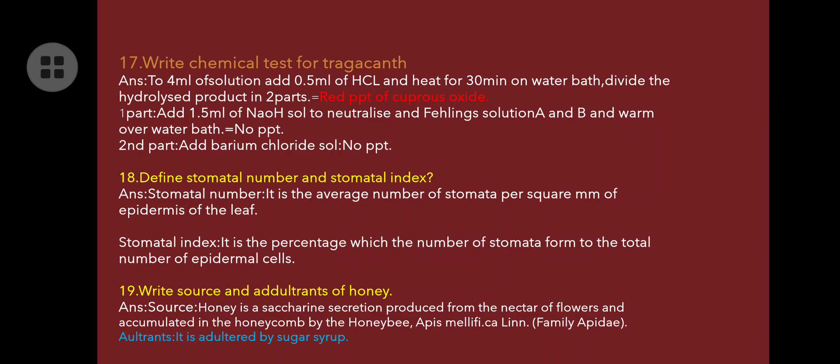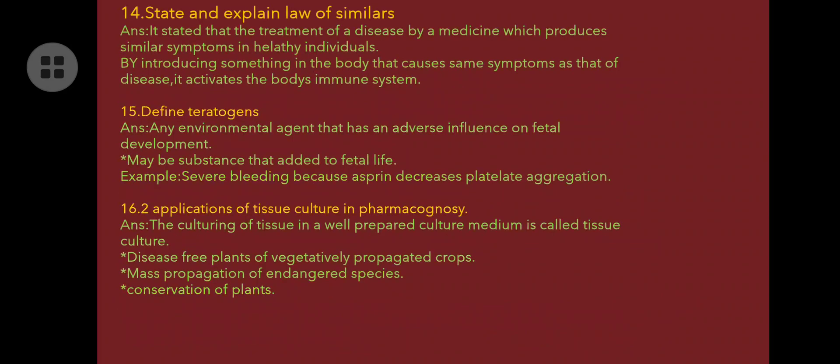Sources and adulterants of honey: honey is a saccharine secretion product from the nectar of flowers, accumulated in the honeycomb by honeybees, family Apidae. It is adulterated by using invert sugar or sugar syrups. These are 19 important questions for pharmacognosy — practice and clear these questions. Thank you.